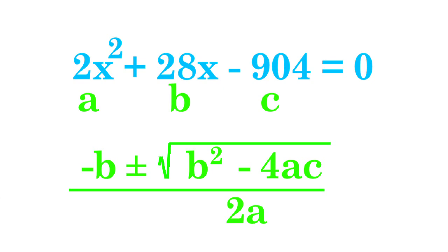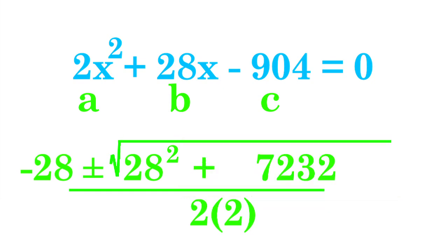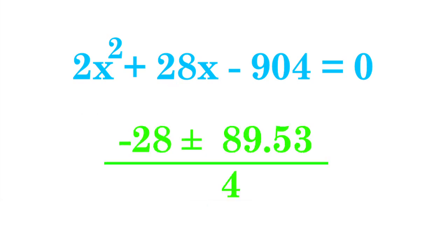So let's plug in these numbers to get our answer. This gives us negative 28 plus or minus 28 squared minus 4 times 2 times negative 904. This whole term becomes plus 7,232 because subtracting a negative number gives us a positive number. Then we have 2 times 2 in the denominator. This comes out to negative 28 plus or minus 89.53 over 4.